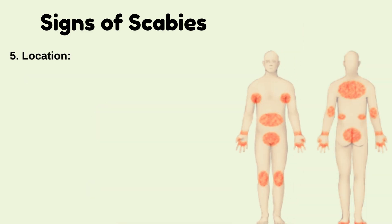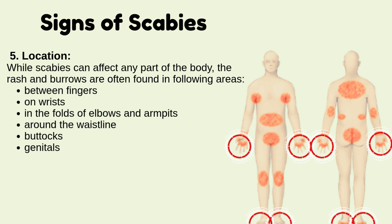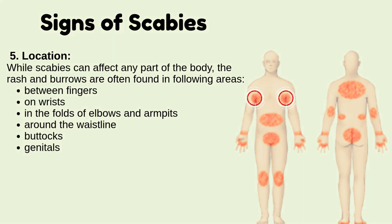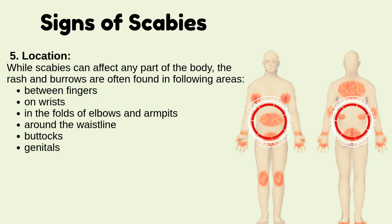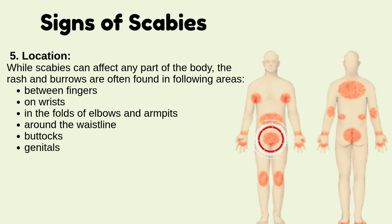Location of scabies: while scabies can affect any part of the body, the rash and burrows are often found in the following areas — in between the fingers, on the wrists, in the folds of elbows and armpits, around the waistline, on the buttocks, and genitals.